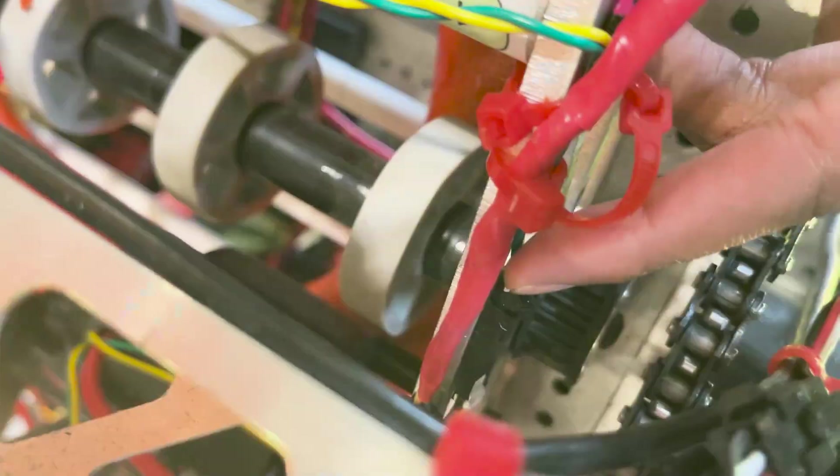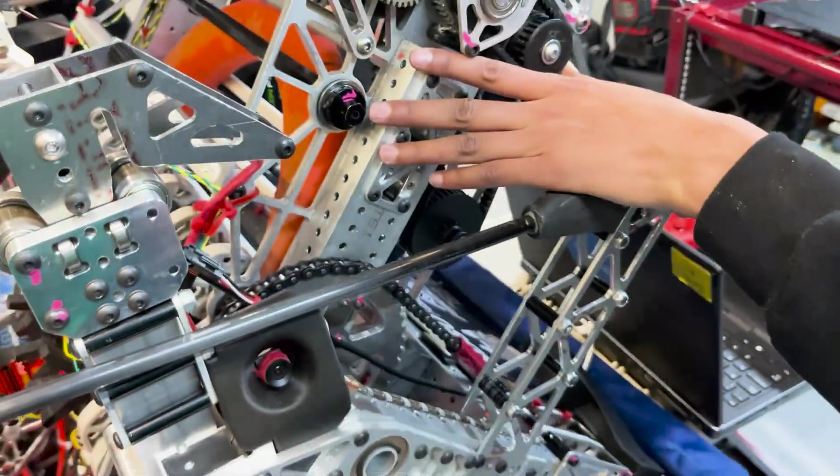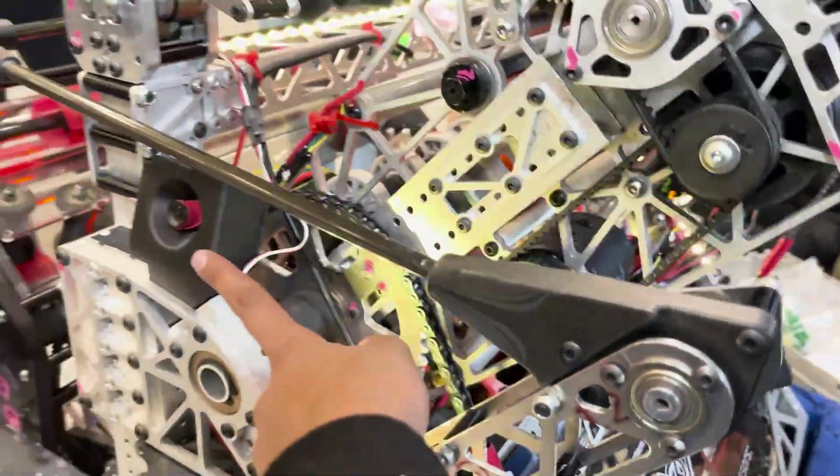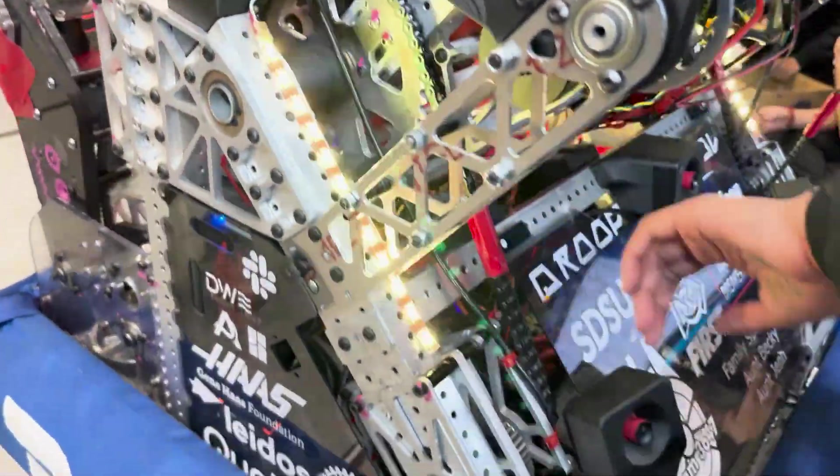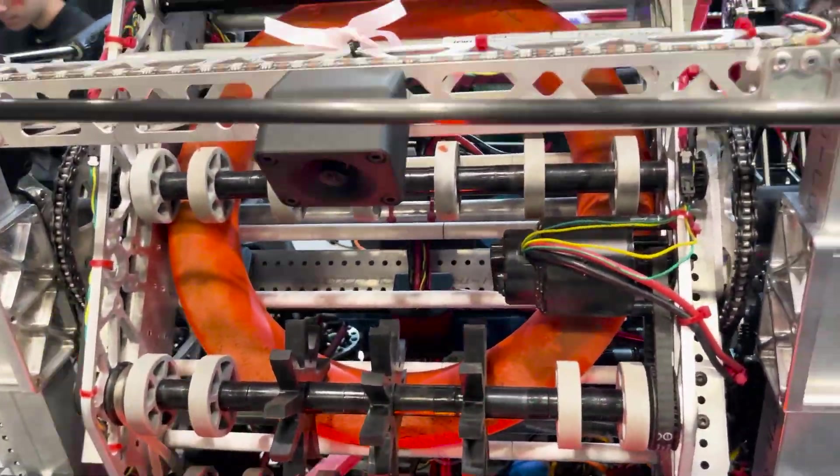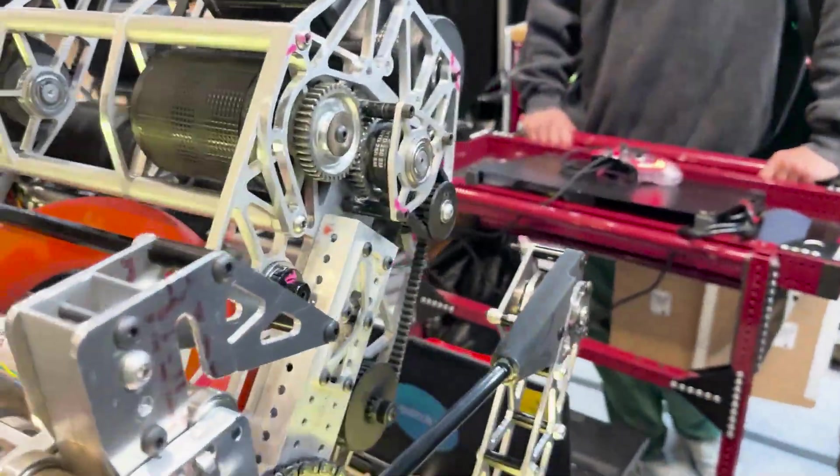On our robot we have six cameras. We have two in the front, then one on each side, and then one here and another on each side, and then two time of flight sensors on the robot on the shooter.